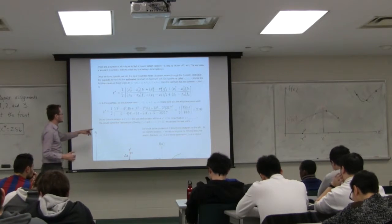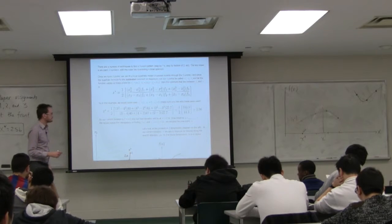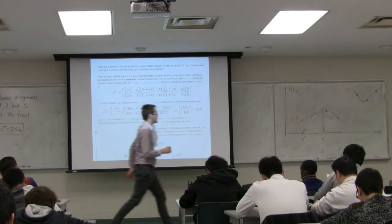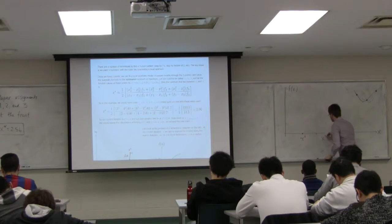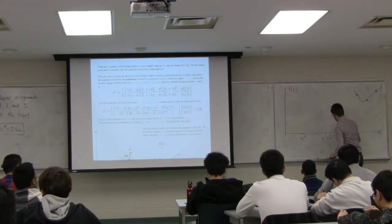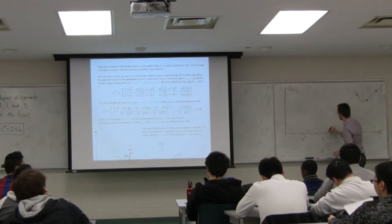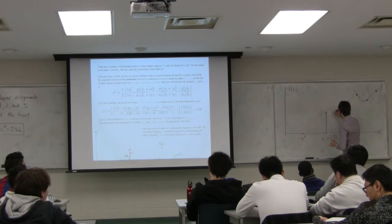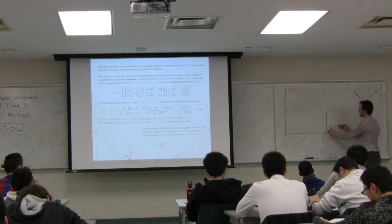That point x-star = 2.56 will become my starting point for the next iteration. So x-star is 2.56, x-naught is 1, and my next iteration will be at 2.56. At that point, x1 = 2.56, I'm going to evaluate my function and calculate the first derivative, f-dash of x1, and then start hunting for the optimum from this point onwards.